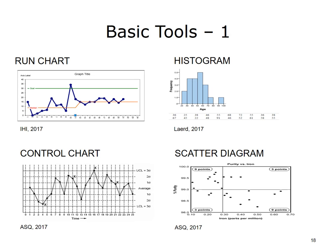A histogram is a graphical display of the frequency distribution of the quality characteristic of interest. A histogram makes variation in a group of data readily apparent and assists in an analysis of how data are distributed around an average or median value. Scatter diagrams show the relationship between two variables and can help establish the presence or absence of correlation between variables, but do not indicate a cause and effect relationship.